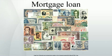Mortgage: the security interest of the lender in the property, which may entail restrictions on the use or disposal of the property. Restrictions may include requirements to purchase home insurance and mortgage insurance, or to pay off outstanding debt before selling the property. Borrower: the person borrowing who either has or is creating an ownership interest in the property.